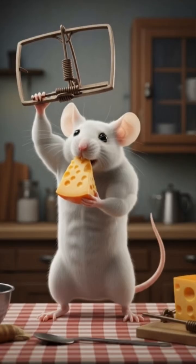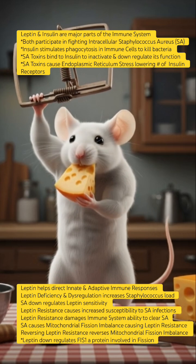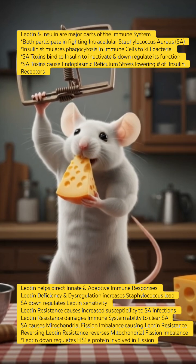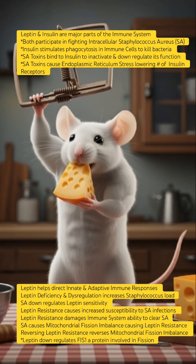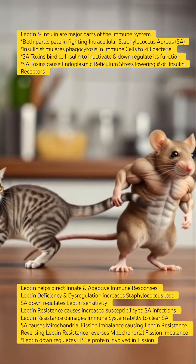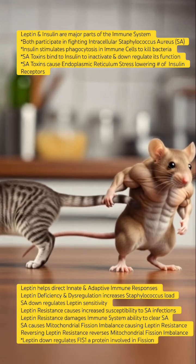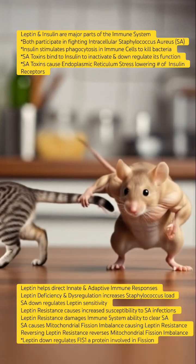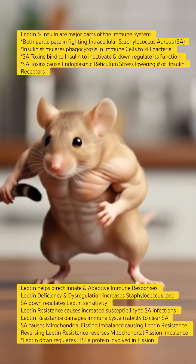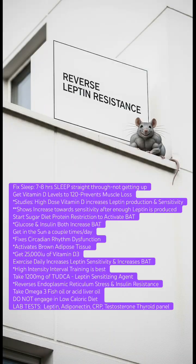Leptin and insulin are major parts of the immune system. Both participate in fighting intracellular staphylococcus. Leptin deficiency and dysregulation increases staphylococcus load in the body. You have to reverse leptin resistance to get rid of the staph in your body.